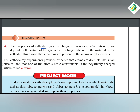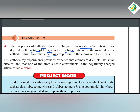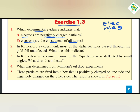Electrons are the constituents of all atoms. The properties of cathode rays, like charge-to-mass ratio, do not depend on the nature of the gas in the discharge tube.